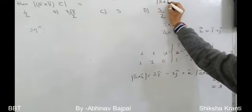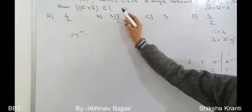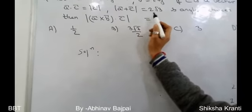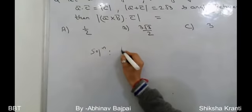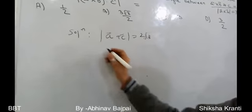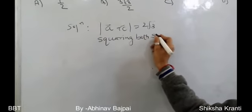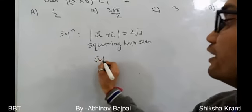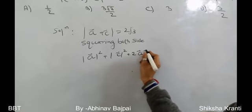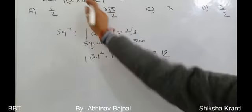From the given conditions: a·c = |c| and |a + c| = 2√3. Squaring |a + c|²: |a|² + |c|² + 2(a·c) = 12. We find |a|² = 4 + 1 + 4 = 9. Substituting a·c = |c|: 9 + |c|² + 2|c| = 12.